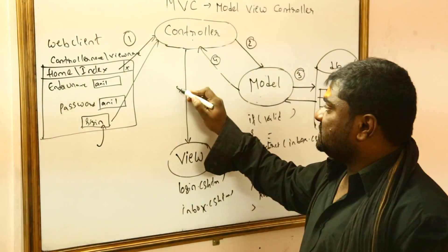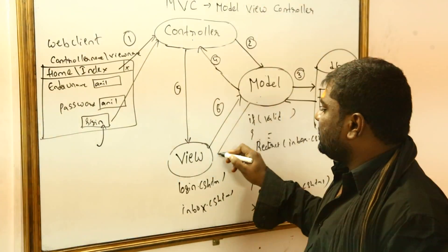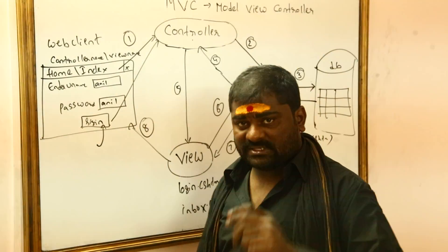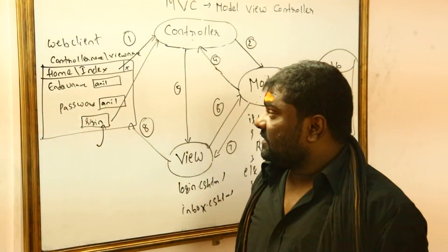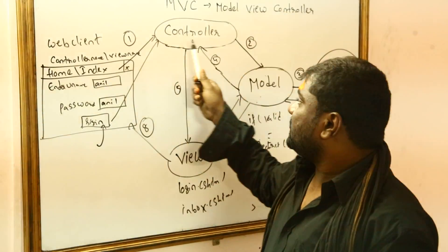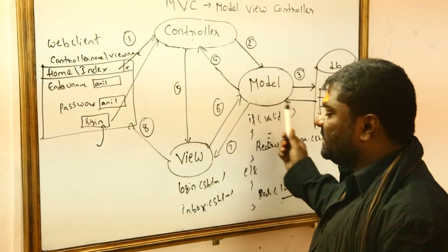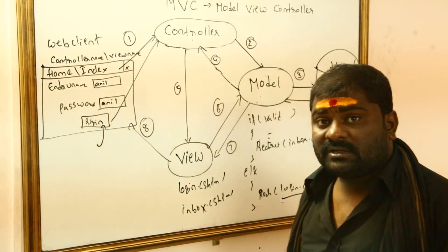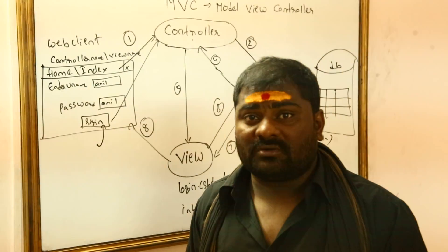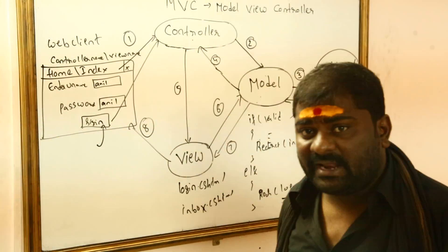Controller invokes the view — that is step five. The view then interacts with the model to get the data and display it in the browser. This is the control flow in MVC. Inside the model you write ADO.NET code, LINQ code, or Entity Framework code — all the database-related code goes inside the model.